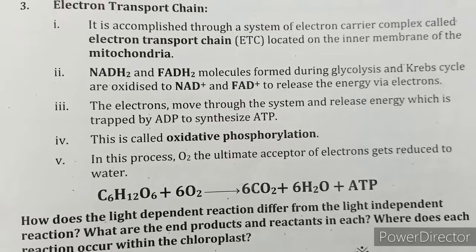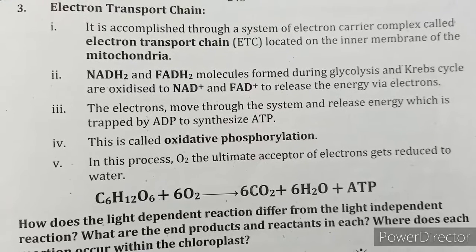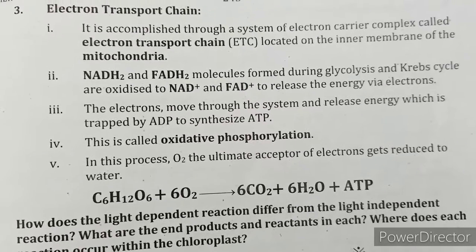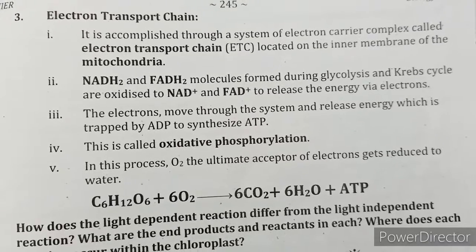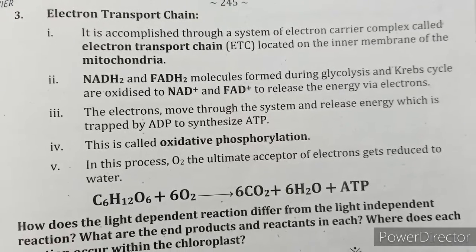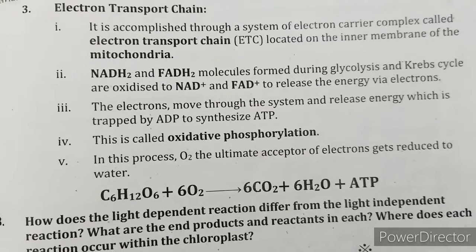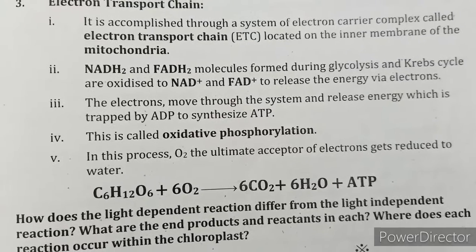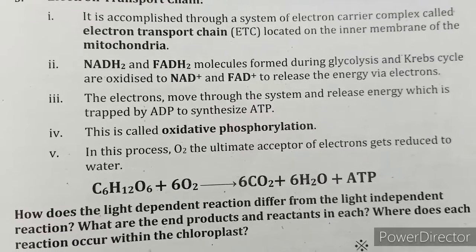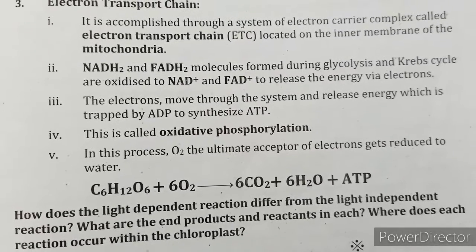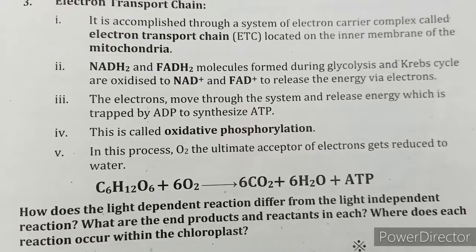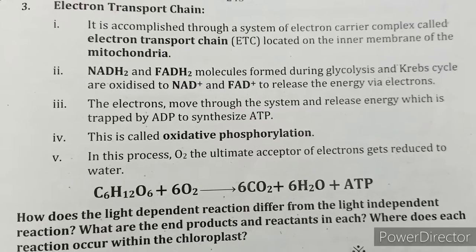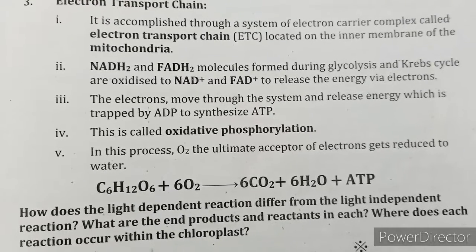Stage 3 — Electron transport chain: it is a system of electron carrier complexes located on the inner membrane of the mitochondria. NADH2 and FADH2 molecules formed during glycolysis and the Krebs cycle are oxidized to NAD+ and FAD+, releasing energy via electrons. The electrons move through the system and release energy, which is trapped by ADP to synthesize ATP — this is called oxidative phosphorylation.